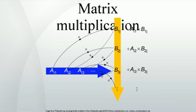Kronecker product: for two matrices A and B of any different dimensions m×n and p×q respectively, with no constraints on the dimensions of each matrix, the Kronecker product is the matrix with dimensions mp×nq. This is the application of the more general tensor product applied to matrices.